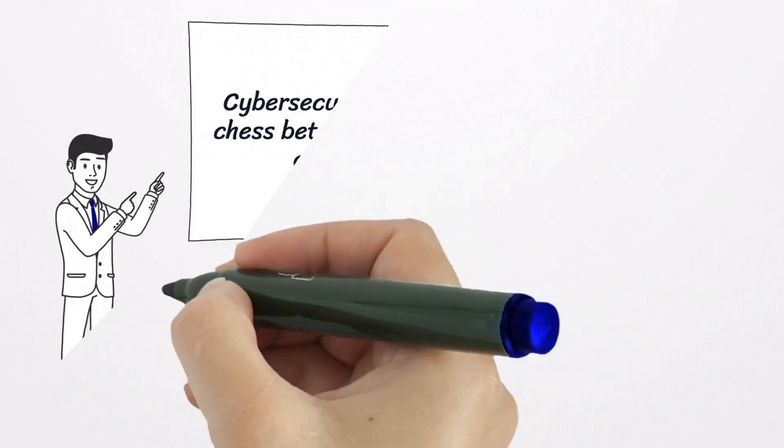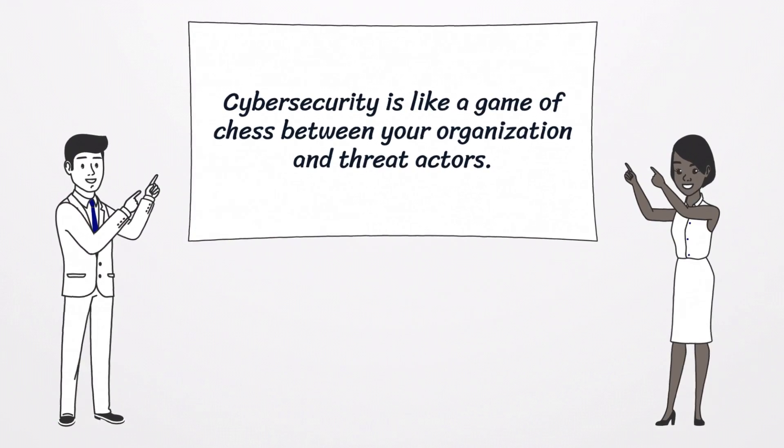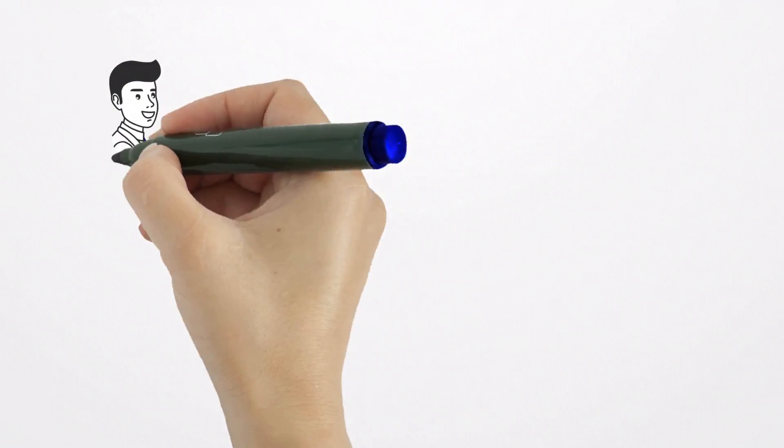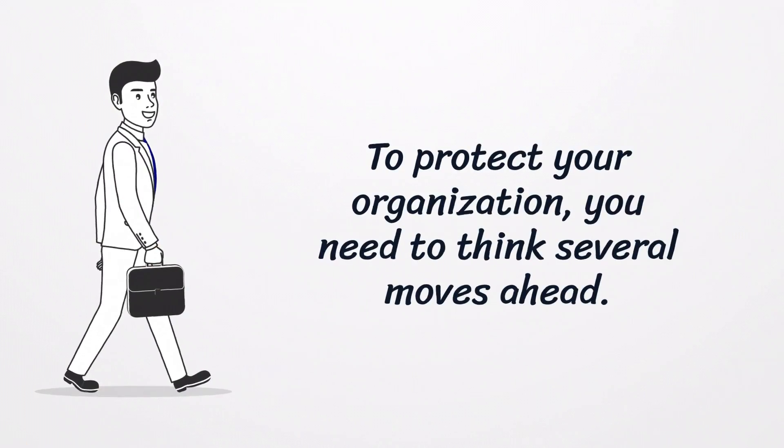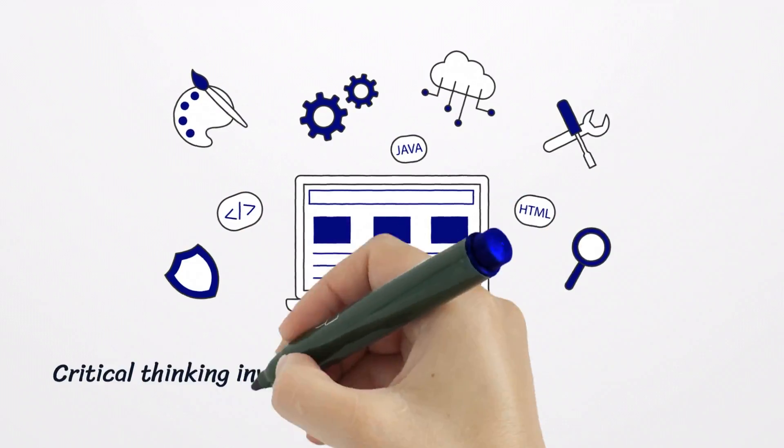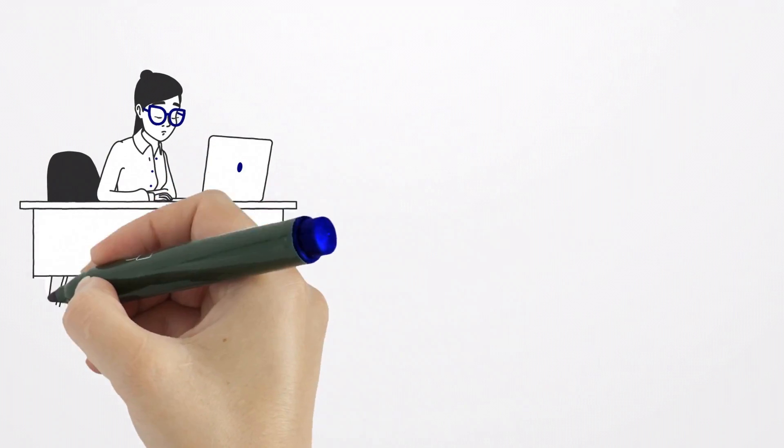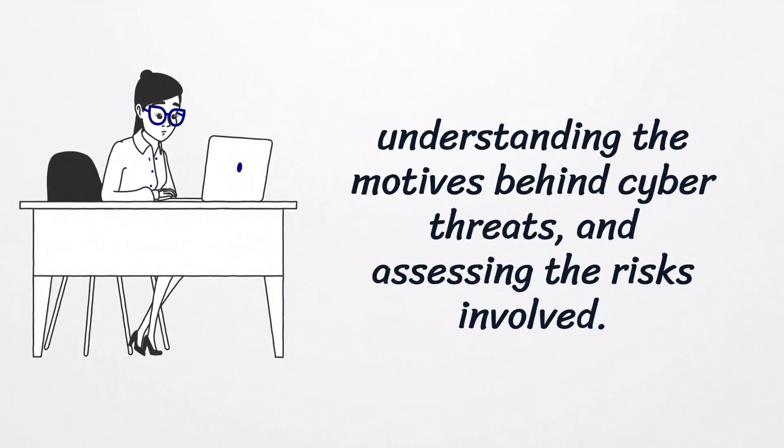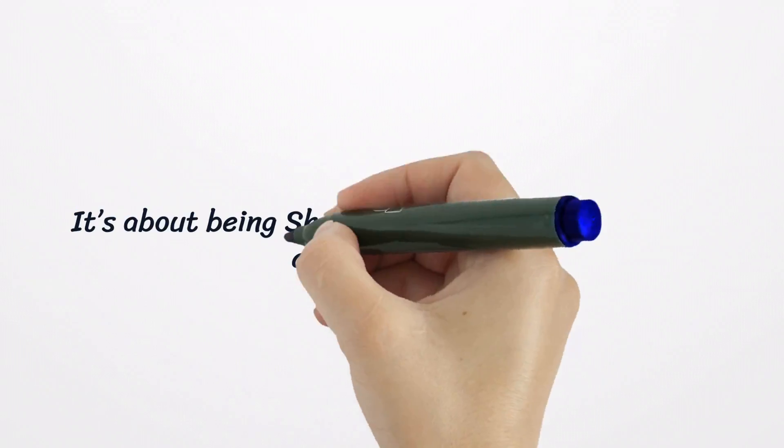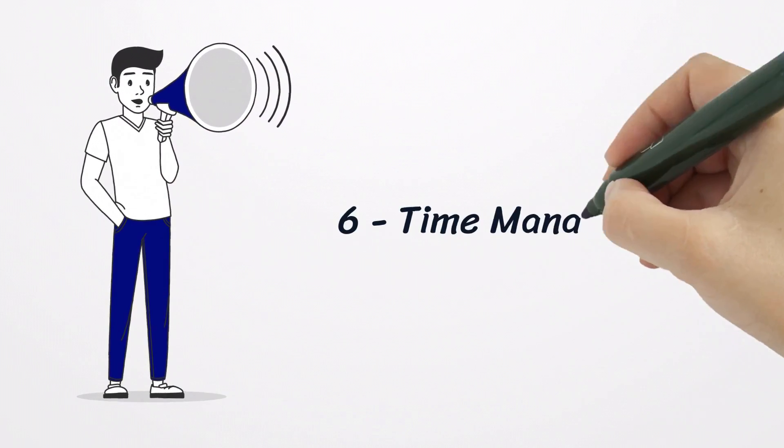Fifth, Critical Thinking. Cybersecurity is like a game of chess between your organization and threat actors. To protect your organization, you need to think several moves ahead. Critical thinking involves analyzing information from different angles, understanding the motives behind cyber threats, and assessing the risk involved. It's about being Sherlock Holmes in the world of cybersecurity.